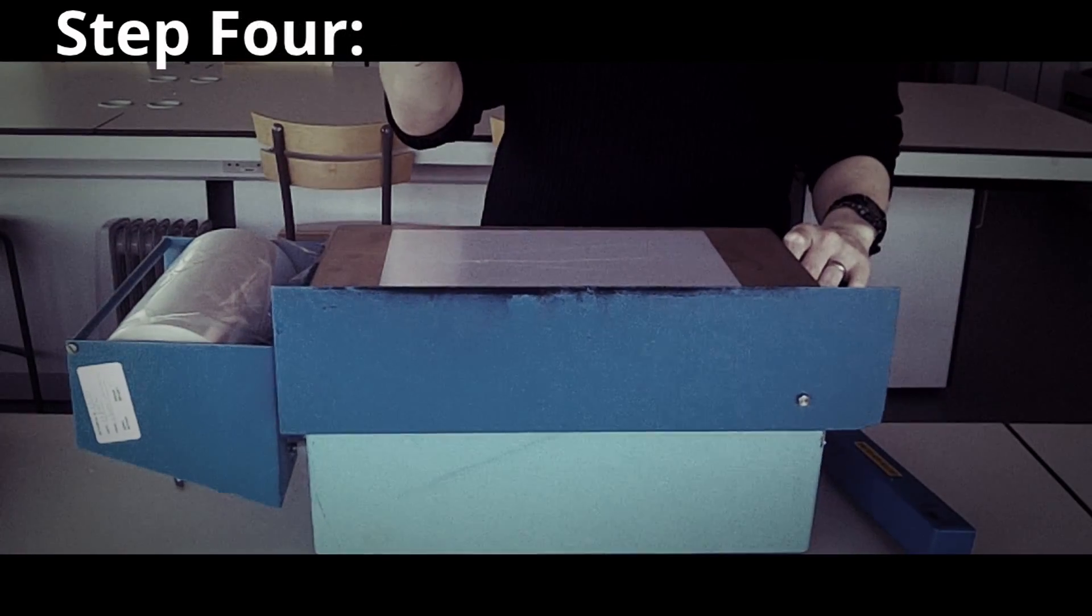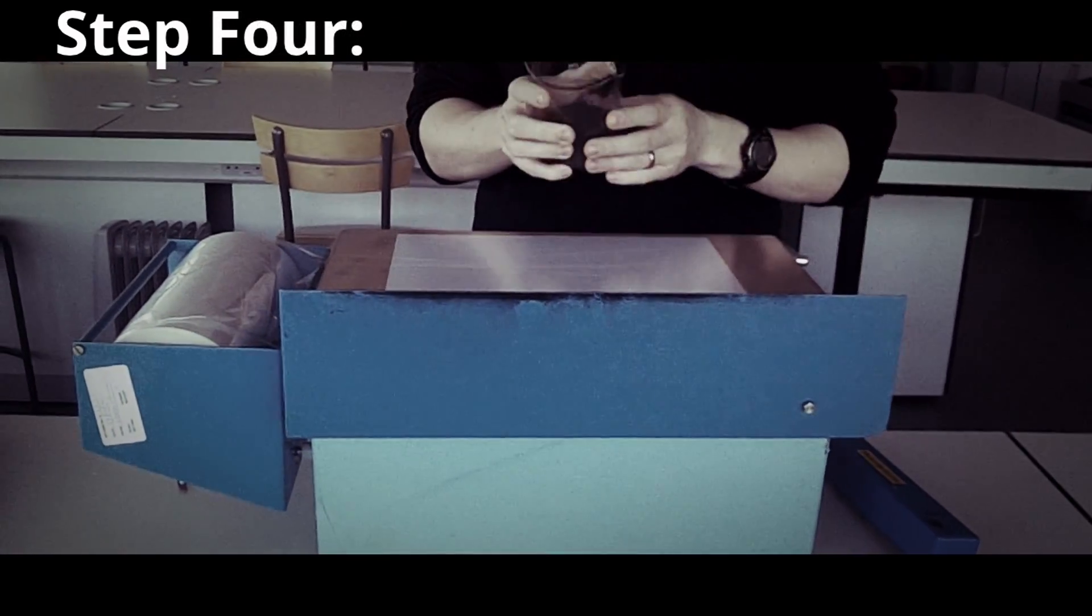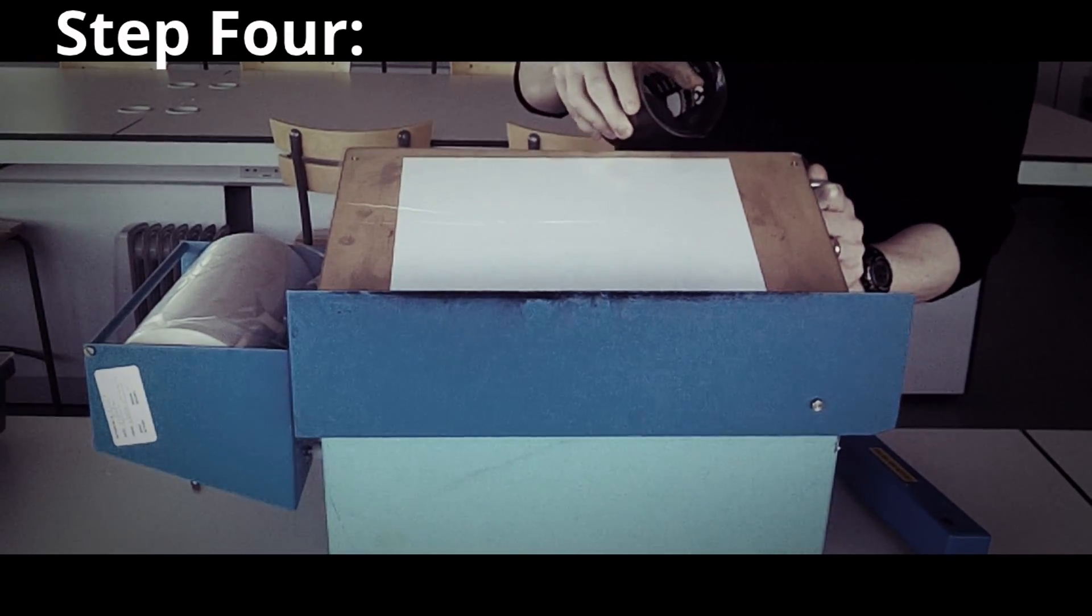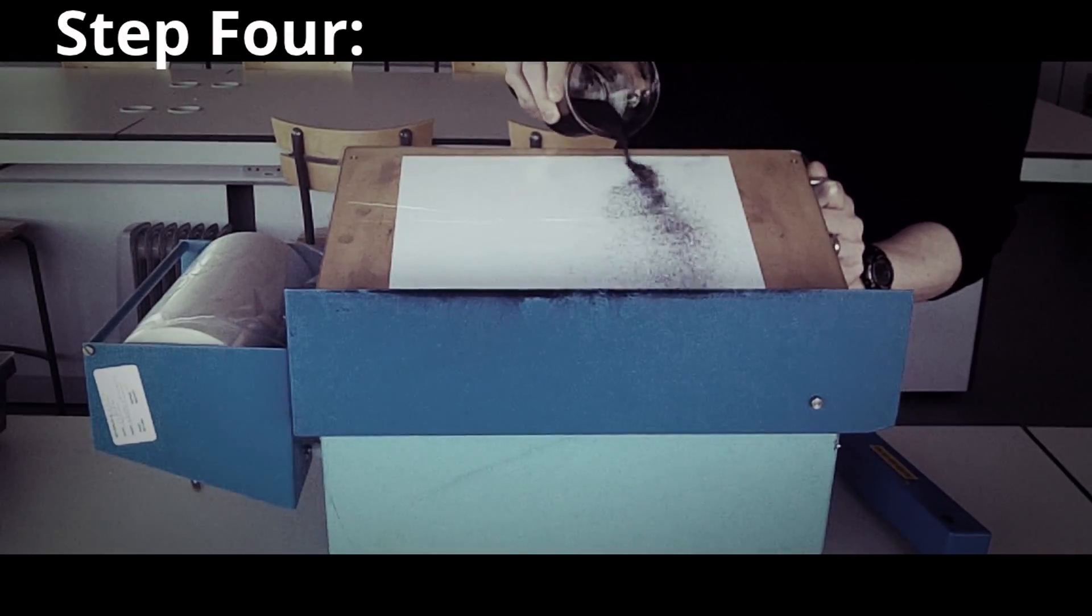The final step is to take some negatively charged photocopy toner balls. Gently lift up the surface of the machine and sprinkle the negative toner over the surface of your document.